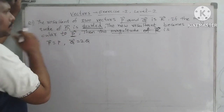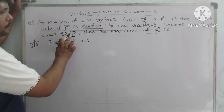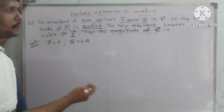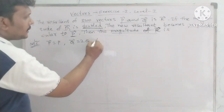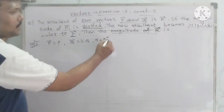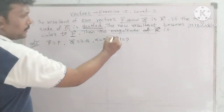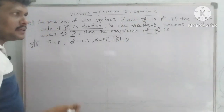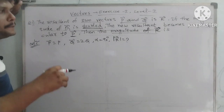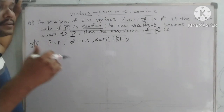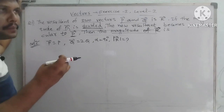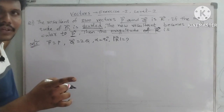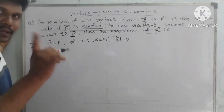Clear? Next, what angle do we take? Alpha angle — I am taking it between P vector and the new resultant vector. Since the new resultant vector is perpendicular to P vector, I am taking alpha equals 90 degrees. Now we have to find the magnitude of R vector.